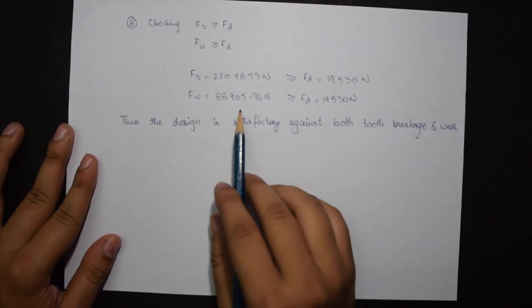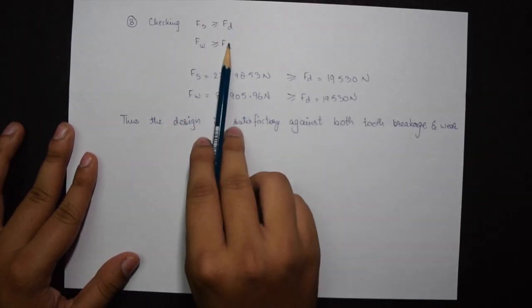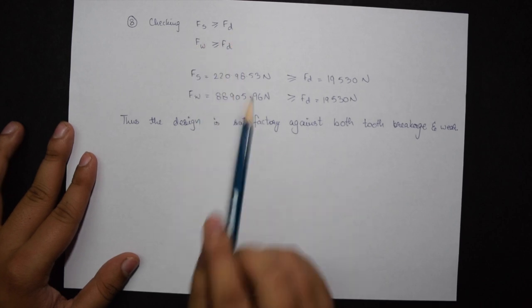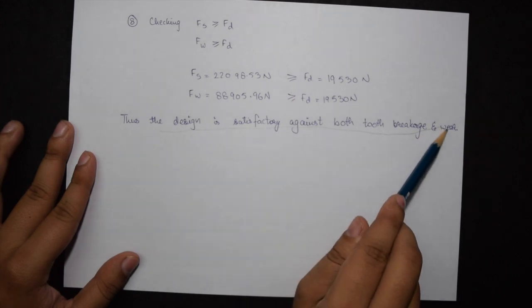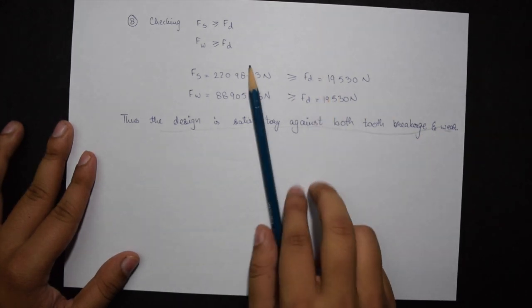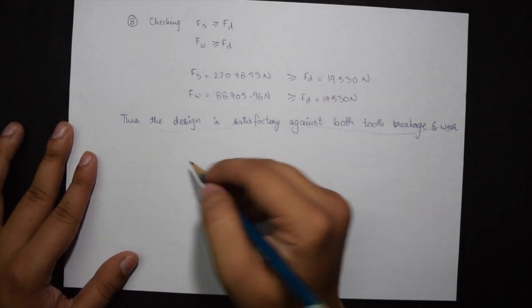Finally I have to check whether my FS is greater than equal to FD and FW is greater than equal to FD. So here both of these conditions are getting satisfied. Thus the design is satisfactory against both the breakage and the wear.